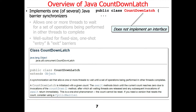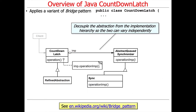CountDownLatch does not implement any interface — it just defines the class itself. Internally, the Java CountDownLatch applies a variant of the bridge pattern, which decouples the abstraction from the implementation hierarchy so the two can vary independently.